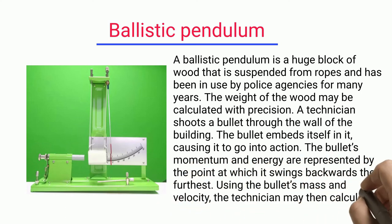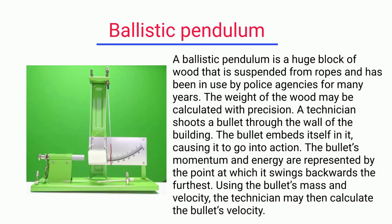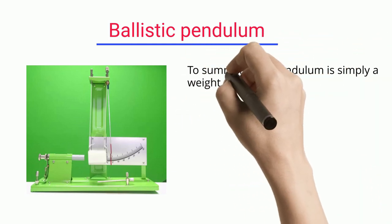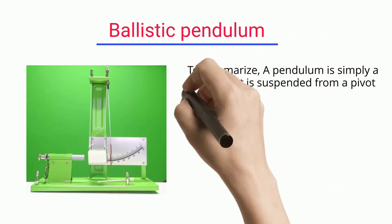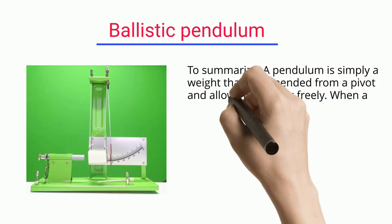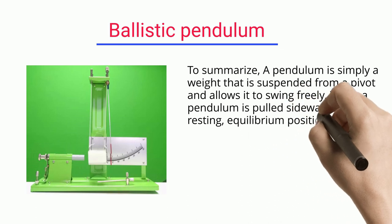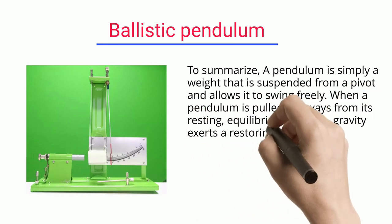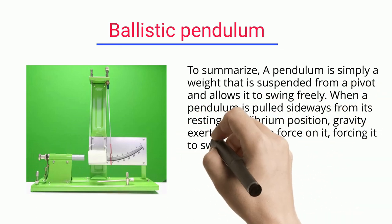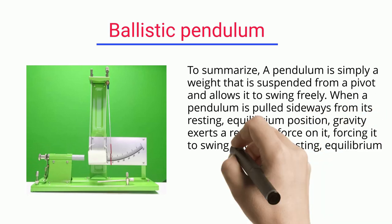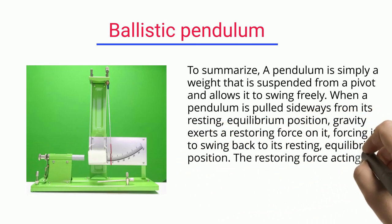To summarize, a pendulum is simply a weight that is suspended from a pivot and allows it to swing freely. When a pendulum is pulled sideways from its resting equilibrium position, gravity exerts a restoring force on it, forcing it to swing back to its resting equilibrium position.